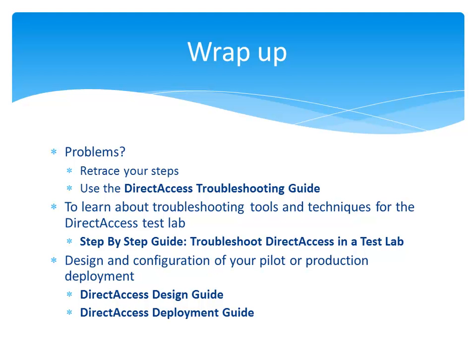To use the Direct Access Test Lab to learn about Direct Access troubleshooting tools and techniques, see the document titled Step-by-Step Guide to Troubleshoot Direct Access in a Test Lab, which will provide you information about Direct Access tools, the results of those tools as Client1 connects to the different subnets, and a series of exercises where you break the Direct Access configuration in a specific way and then use documented troubleshooting techniques to discover the root cause. For more information about the design and configuration of Direct Access for your pilot or production deployment, see the documents titled Direct Access Design Guide and Direct Access Deployment Guide.